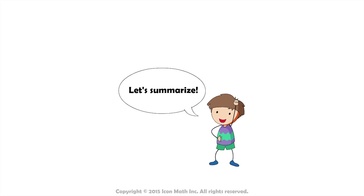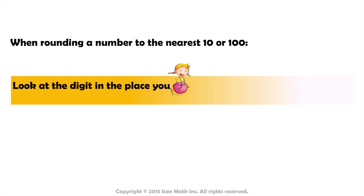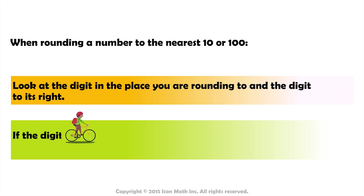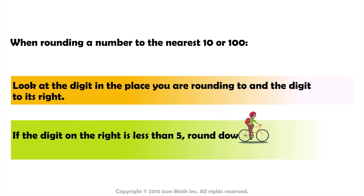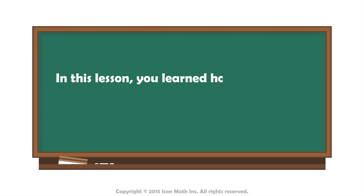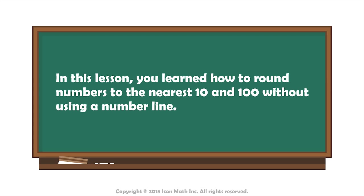Let's summarize. When rounding a number to the nearest 10 or 100, look at the digit in the place you're rounding to and the digit to its right. If the digit on the right is less than 5, round down. If it is greater than or equal to 5, round up. In this lesson, you learned how to round numbers to the nearest 10 and 100 without using a number line.